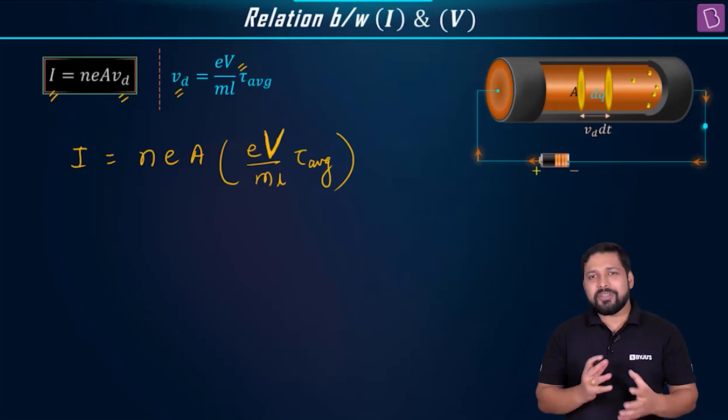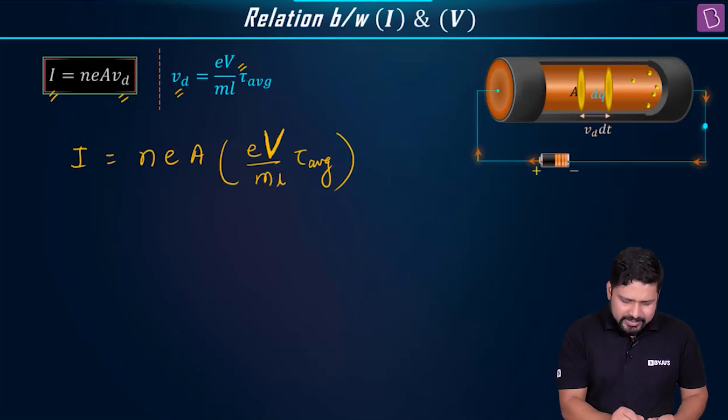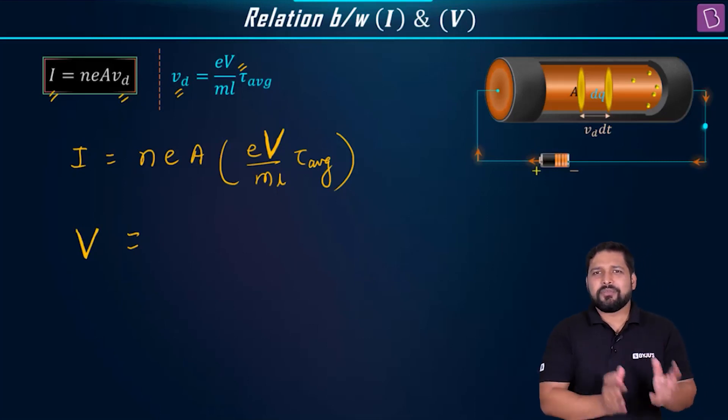I want to get a relation between V and I. So let me keep V on one side and take all the other things on the other side. V is equal to - I just want to express it as V is equal to something times I.